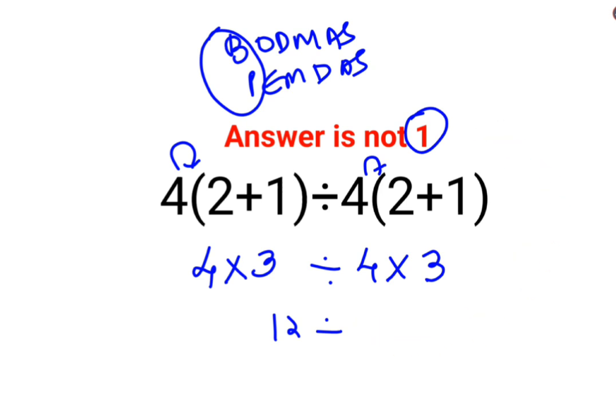No, that's not how these things are supposed to be done. Please remember that when you have something like this in mathematics, division and multiplication hold equal precedence. So in sums like these, you just have to go from left to right. Whatever operation happens first on your left hand side has to be done first.